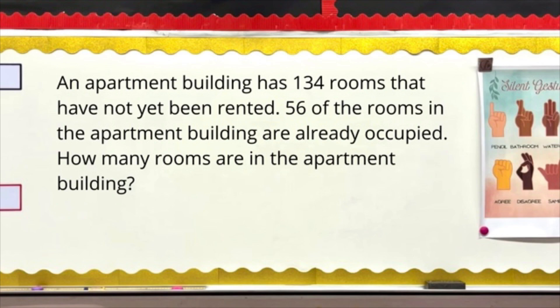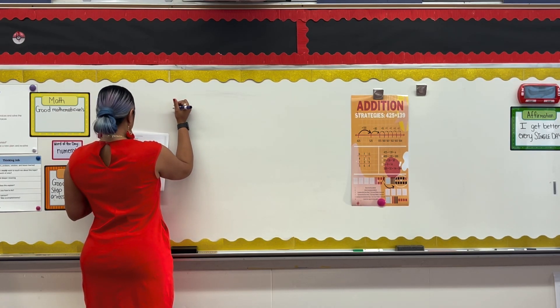The problem reads: an apartment building has 134 rooms that have not yet been rented. 56 of the rooms in the apartment building are already occupied. How many rooms are in the apartment building? The first thing I want to do according to my mathematician's plan is to read and interpret the question.